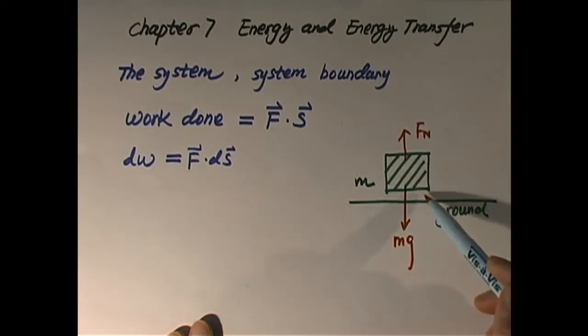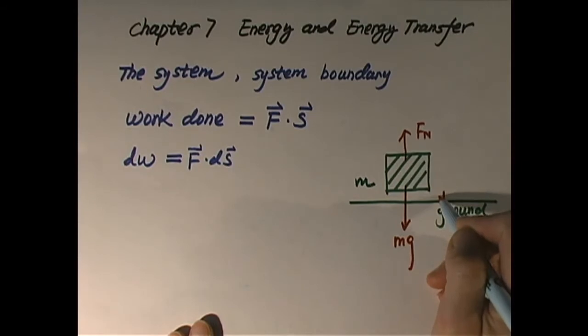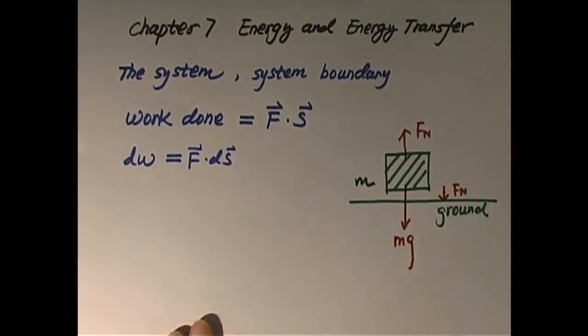When the ground supports our object with Fn, as a matter of fact the object presses the ground downward. So there's a force on the ground, same magnitude Fn but opposite direction. But we are not concerned about that force because that force is on the ground. Ground is not part of our system. So it is very important to identify what is our system. Then we focus on the system and ask what the environment does to the system.